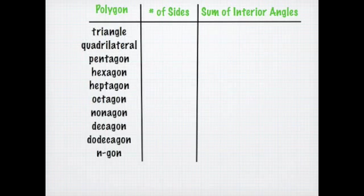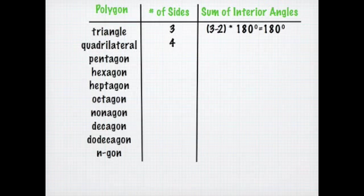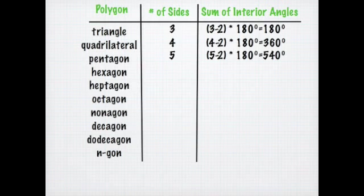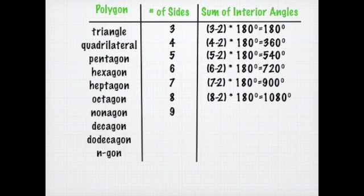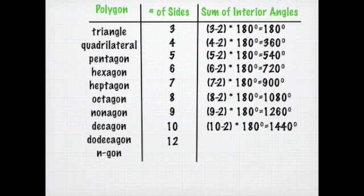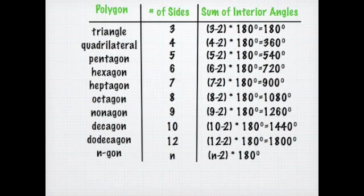Looking at this table: a triangle has three sides, so 3 − 2 times 180 is 180 degrees. For the quadrilateral, four sides: 4 − 2 times 180 gives us 360. Same thing for the pentagon — five sides: 5 − 2 times 180 is 540. We can do this for all of them, just continuing to put in the number of sides for n. And then for an n-gon — a 30-gon, a 20-gon, a 55-gon — because as you get into polygons with more and more sides we don't have special names for those, an n-gon has n sides, and the formula is just (n − 2) × 180.